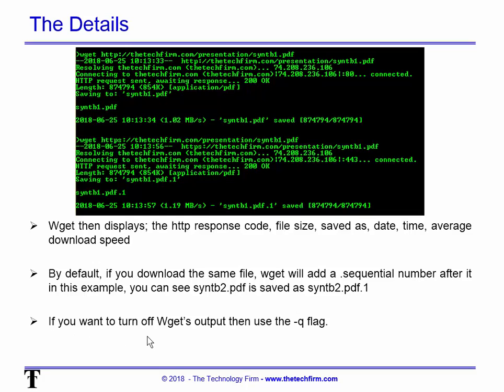If you want to turn off this output, you can use the dash Q flag. Sometimes you want to run this test and measure it from the server's perspective or the network components along the way, so you really don't need to see all this output — just use dash lowercase Q.